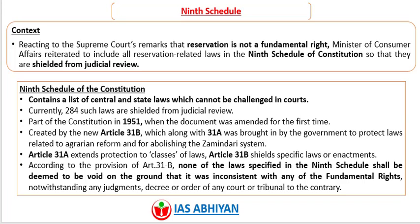The Ninth Schedule became a part of the Constitution in 1951 when the document was amended for the first time. It was created by the new Article 31B, along with Article 31A, brought in by the government to protect laws related to agrarian reform and for abolishing the Zamindari system. Article 31A extends protection to classes of laws, whereas Article 31B seals specific laws or enactments. According to Article 31B, none of the laws specified in the Ninth Schedule shall be deemed void on the ground that it is inconsistent with any fundamental rights, notwithstanding any judgment, decree, or order of any court or tribunal.